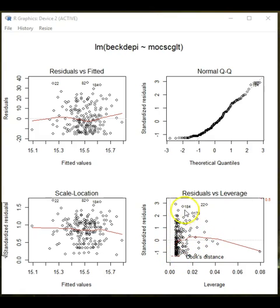Most values are close to zero on the leverage plot, though there is one item here that may be a potential problem. If we had more time we could research that point and try to understand if there is something affecting the fit of the distribution, but for now this is where I will stop with the simple regression model.